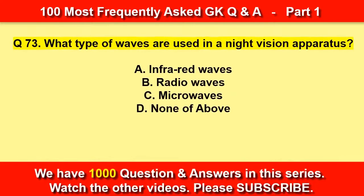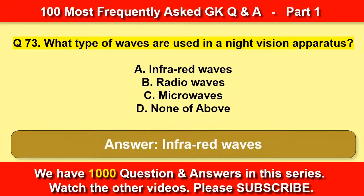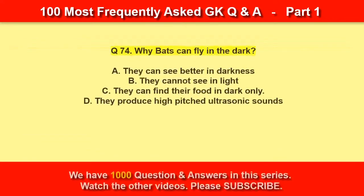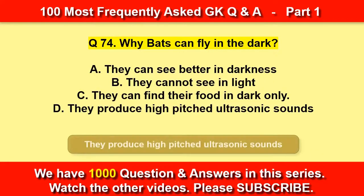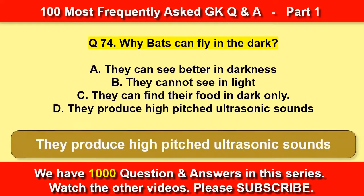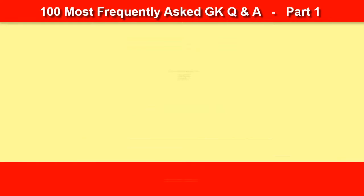What type of waves are used in night vision apparatus? Infrared waves. Why can bats fly in the dark? They produce high-pitched ultrasonic sounds.